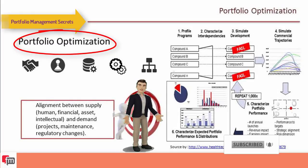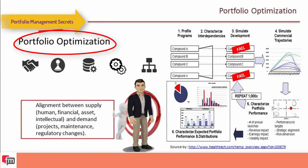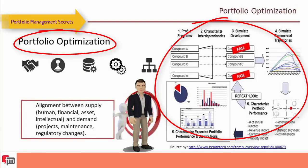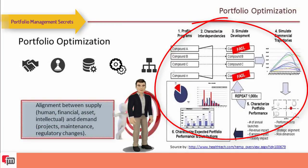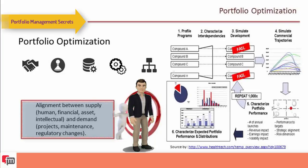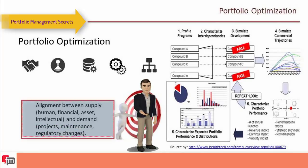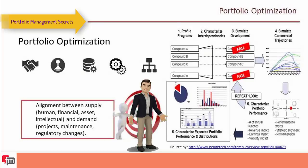Portfolio optimization is the ongoing practice by which benefits, risks, and resources are balanced and optimized. It should be an integral part of any effective organizational planning process to ensure alignment between supply — human, financial, and intellectual assets — and demand from projects, maintenance, and any environmental changes.